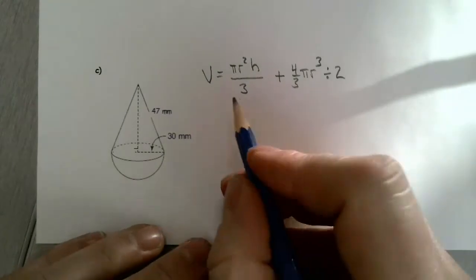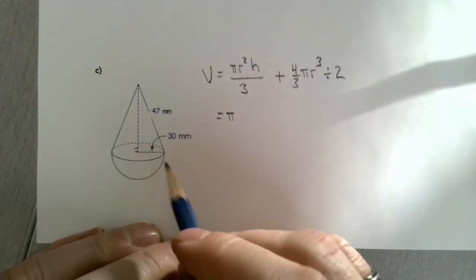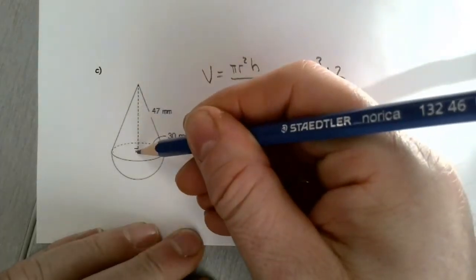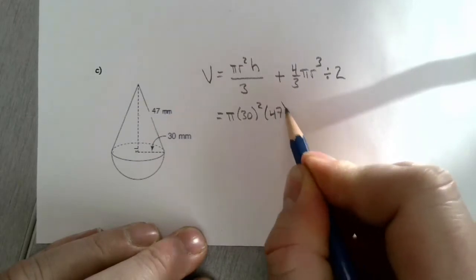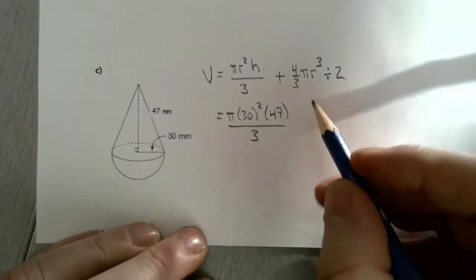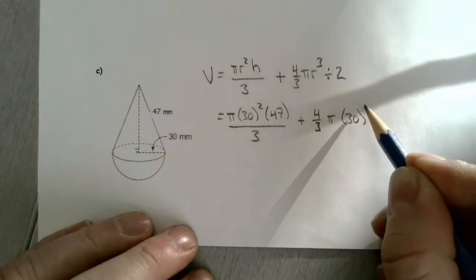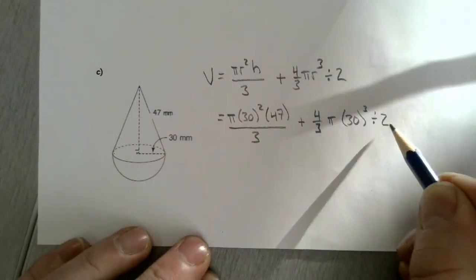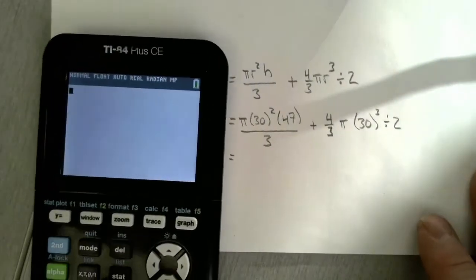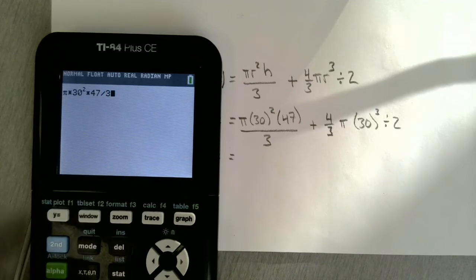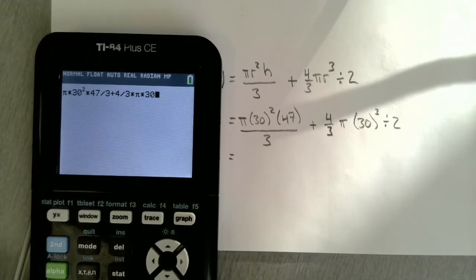Now I just plug in those pieces. Pi times the radius, which is 30 millimeters, so 30 squared, times the height of 47 — the distance from the center of that face to the apex — divided by three. Then we add four-thirds pi times 30 cubed, and divide by two at the end because I only need half of that sphere. So: pi times 30 squared multiplied by 47, divided by 3, plus four divided by 3 times pi times 30 cubed, divided by 2.